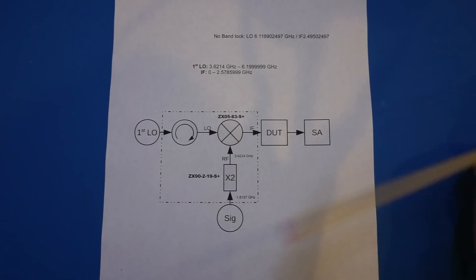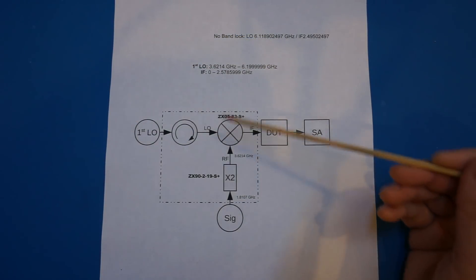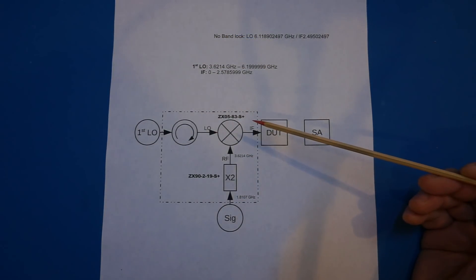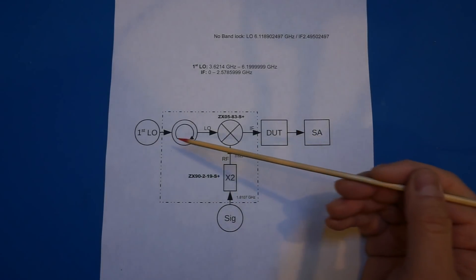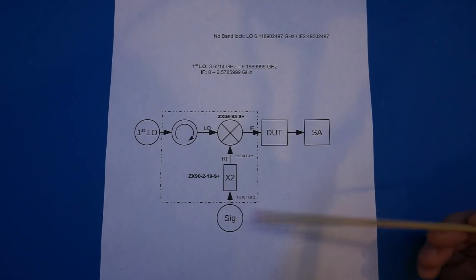The method I used there was to use a mixer to mix the first LO output from the spectrum analyzer and subtract the IF from the LO, and use the output of the mixer to drive the device under test and feed the signal into the spectrum analyzer itself.